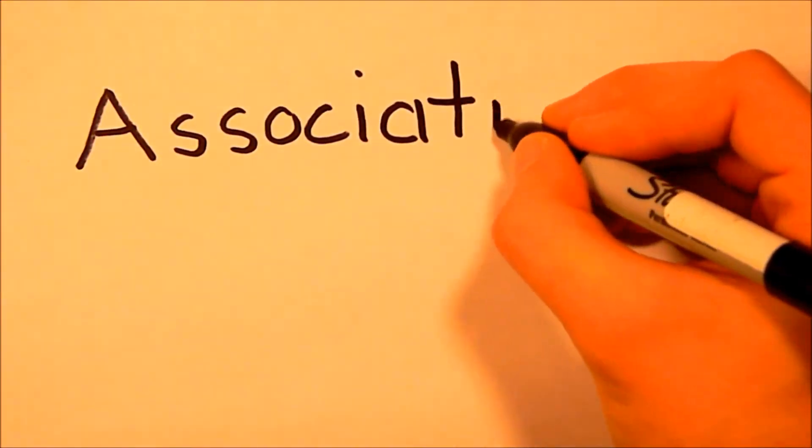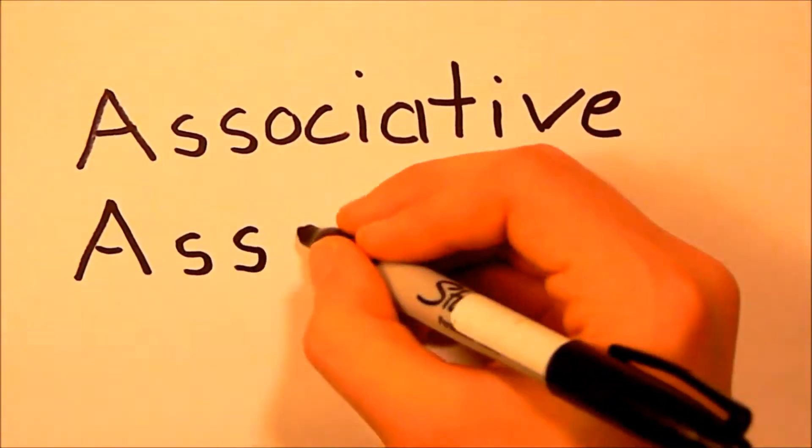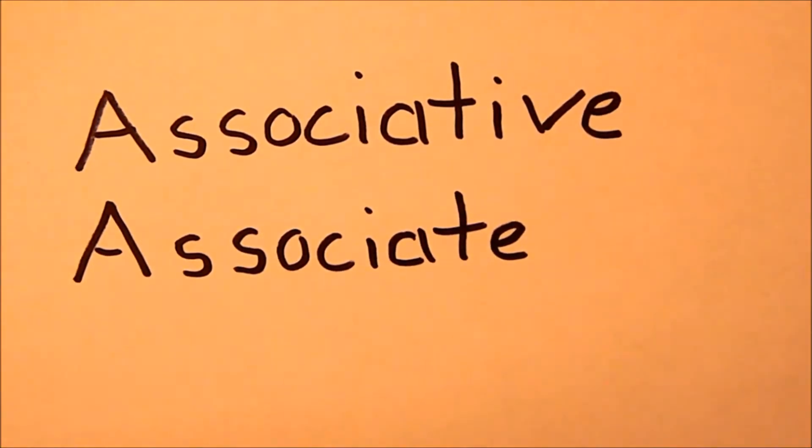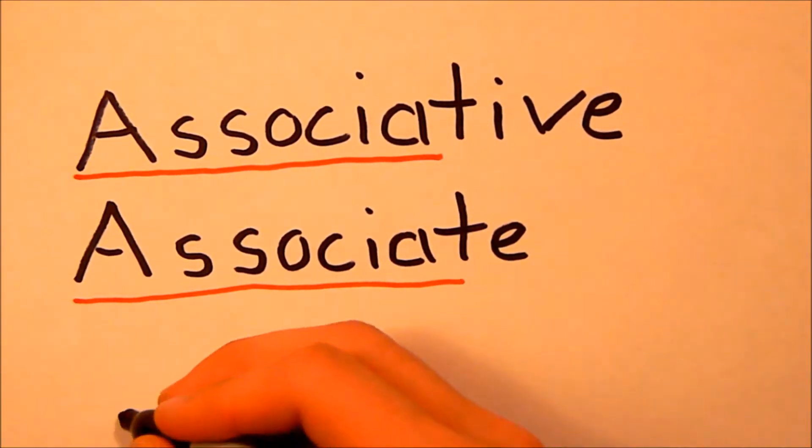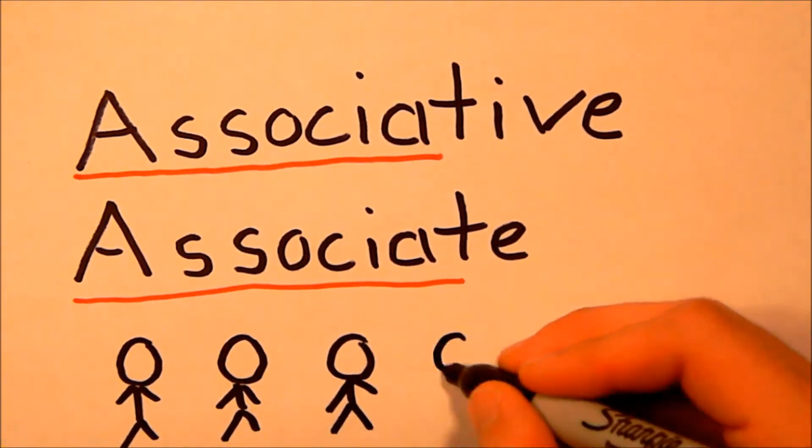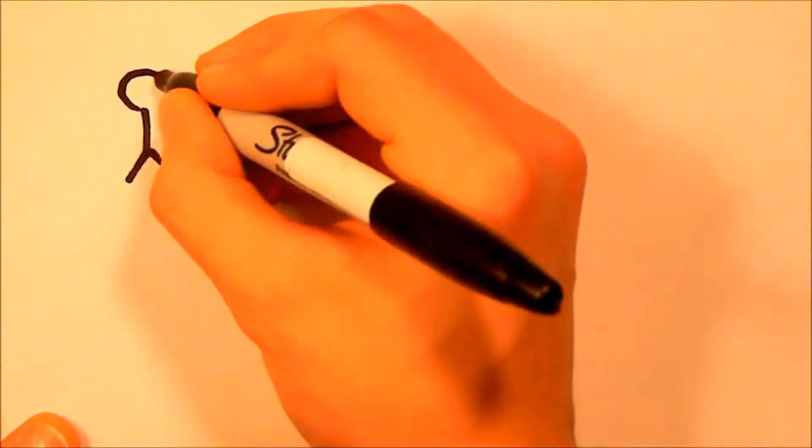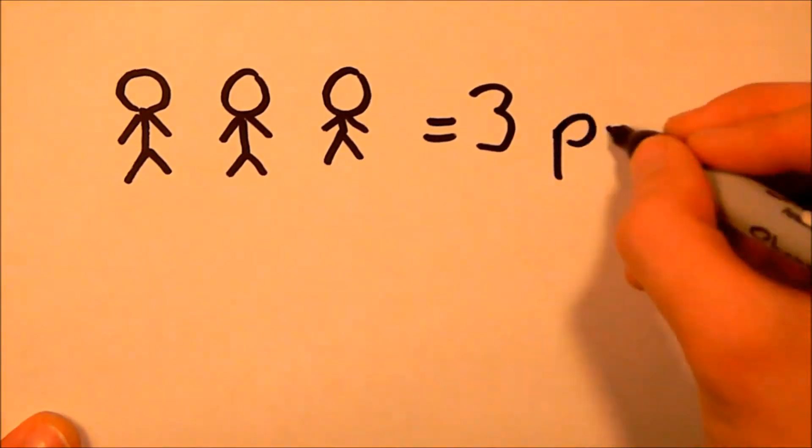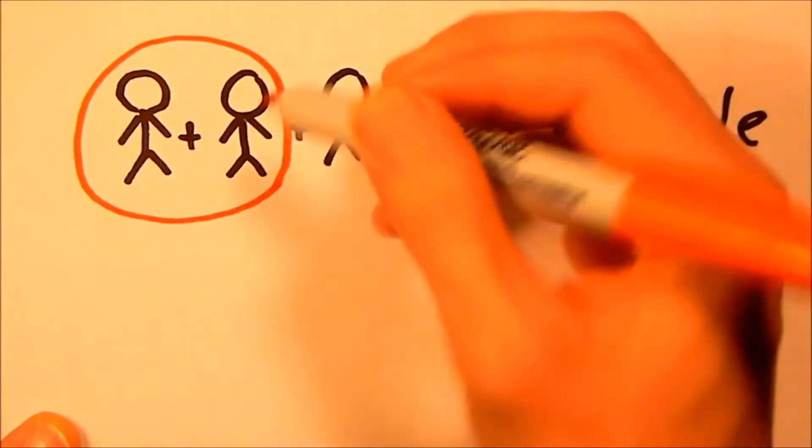An easy trick to remember this is associative association. Think about how an association is a group of people. It doesn't matter how the people are grouped together, you still have the same amount of people overall.